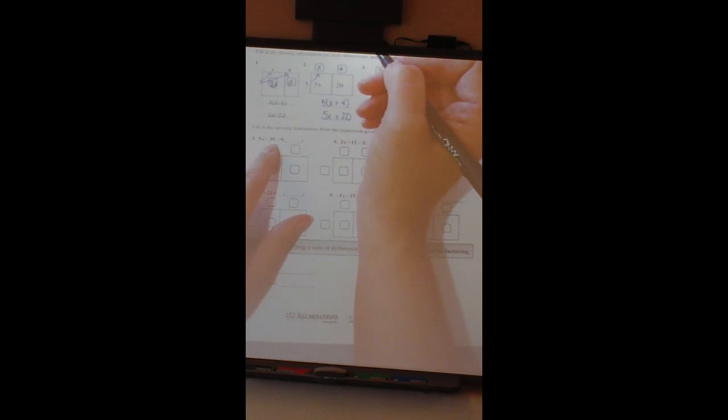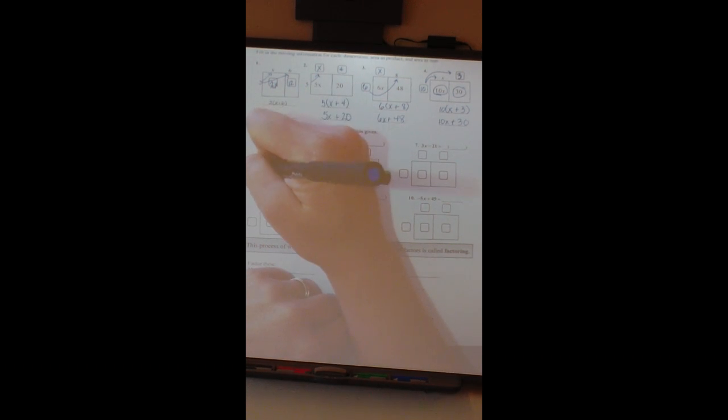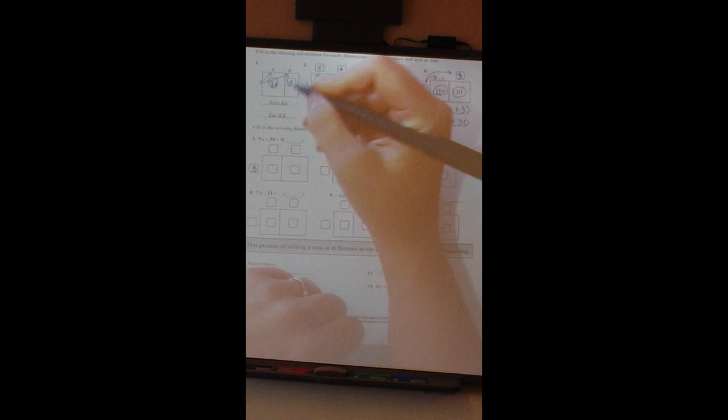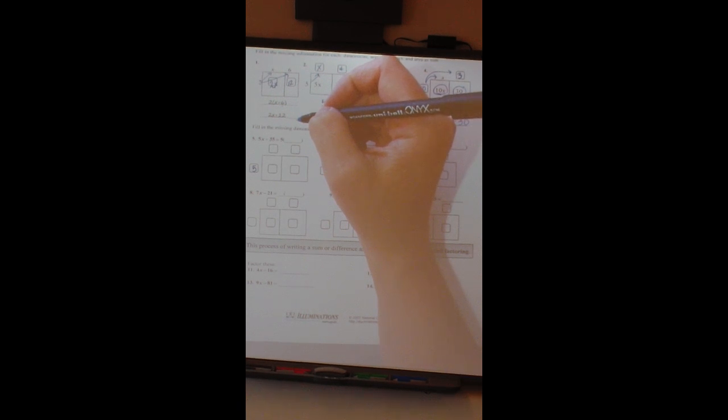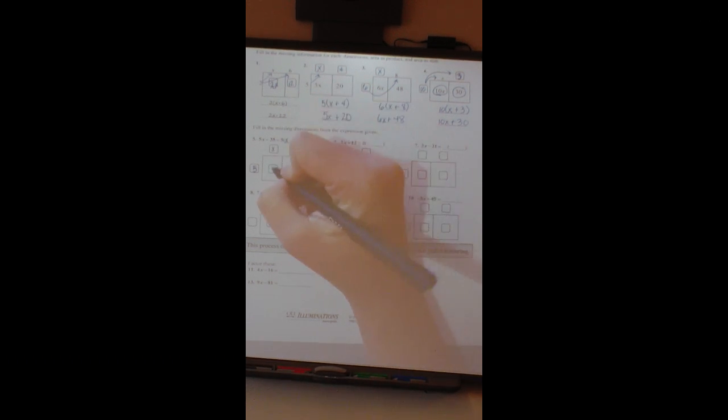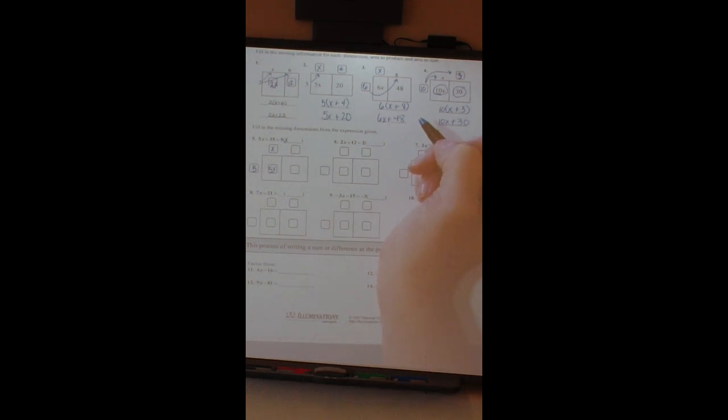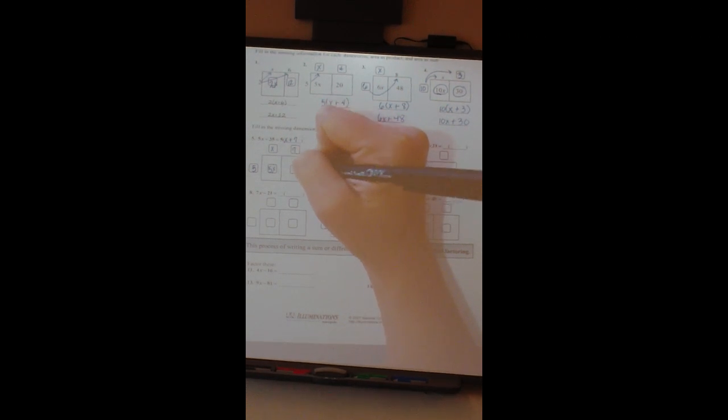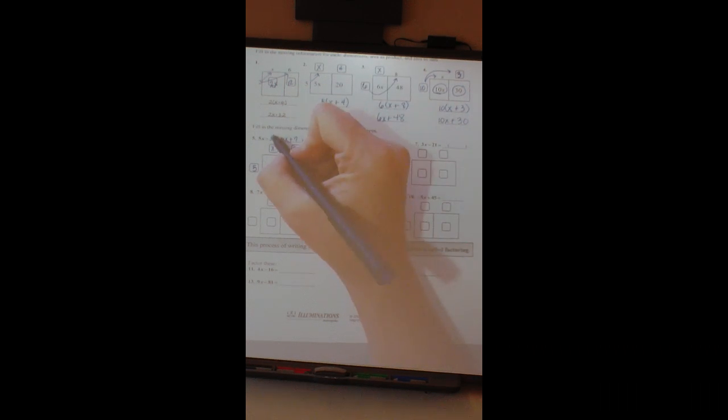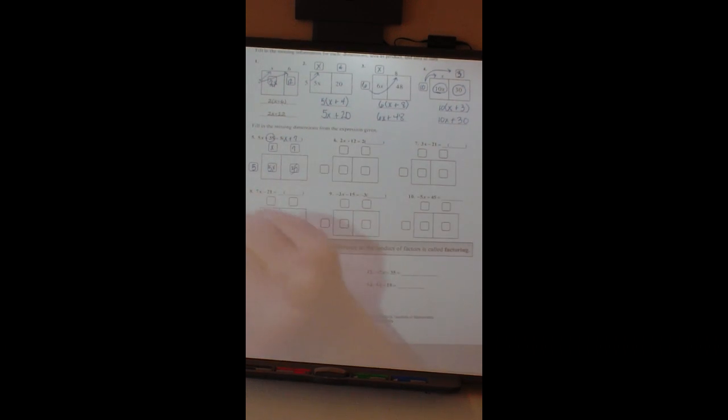So if I have 5x plus 35, it's telling me that my 5 goes on the outside of the parentheses, which means it goes right here. All right, what divided by 5x gives me x? I didn't say that right, did I? All right, Landon? It gives me x. Just x, right? Because 5 times x is 5x. And then you wanted to say, well, what, so we'll see this 35 here, well, what times 5 is 35, and it's 7, so we said 5 times 7.